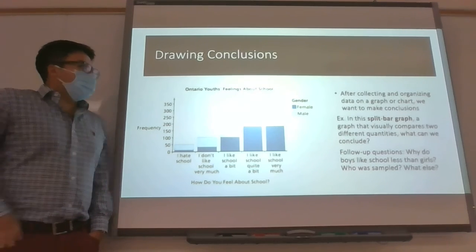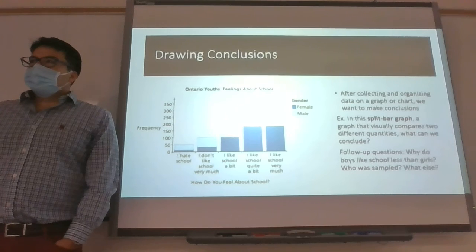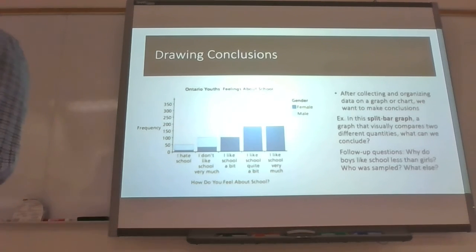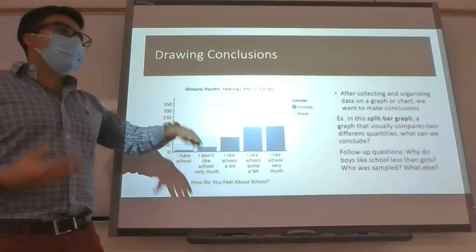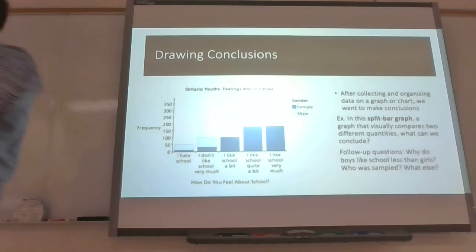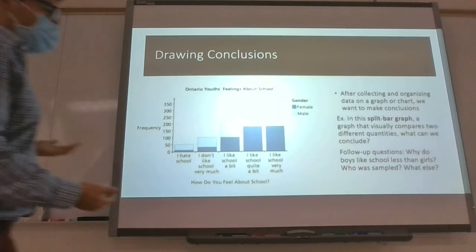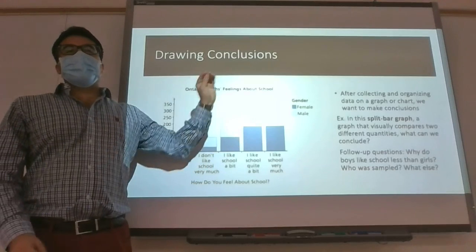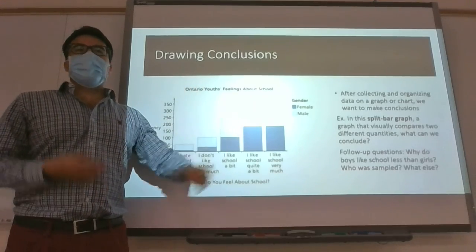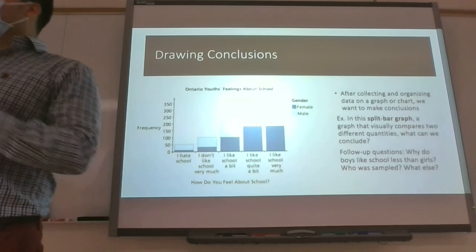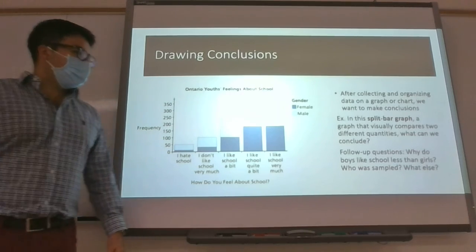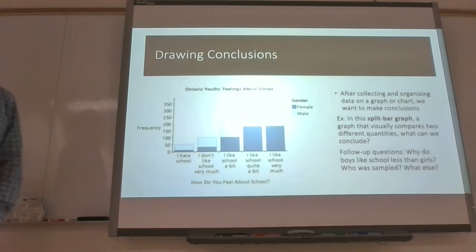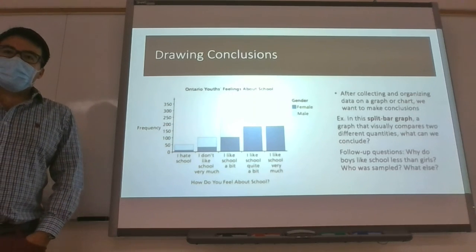Which school did they go to? We don't even know — it just says 'Ontario youths.' There's a lot of information we don't know. If you're doing this graph, you really have to have more follow-up. That's why we're learning how to do reports. In this course you have to learn that it's not just about putting a graph in Excel — you have to tell me where did you get the information, which school, how many students per school, what was the demographic, was it more males or females? That stuff is very important.